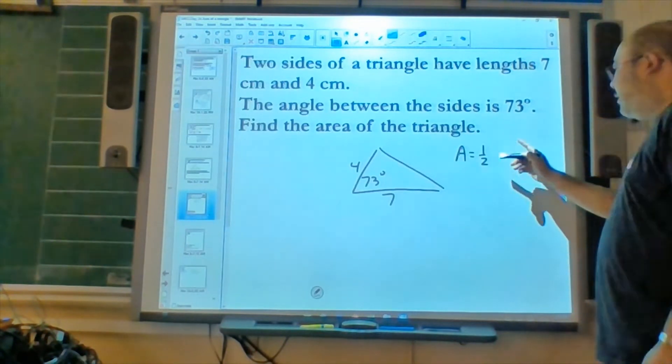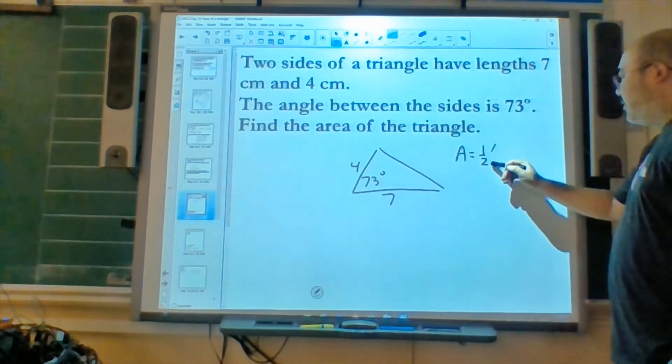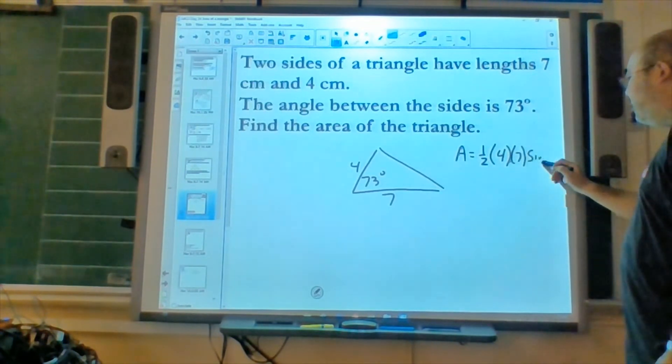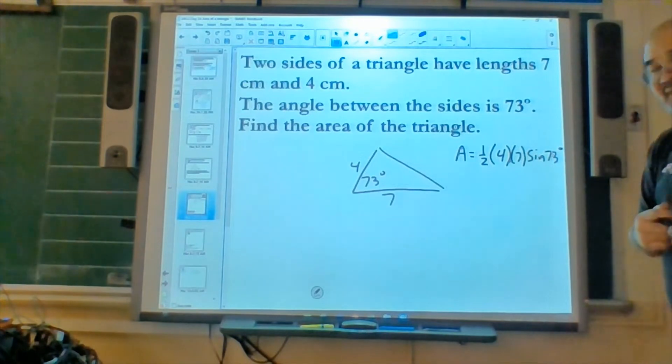One half, and it's the product of two sides, 4 and 7, times the sine of the angle measure, 73 degrees. Okay?